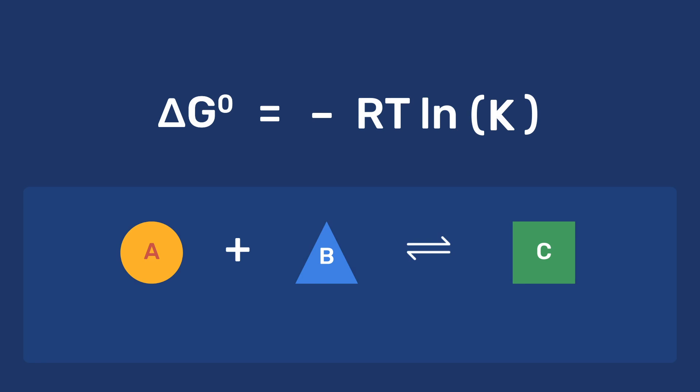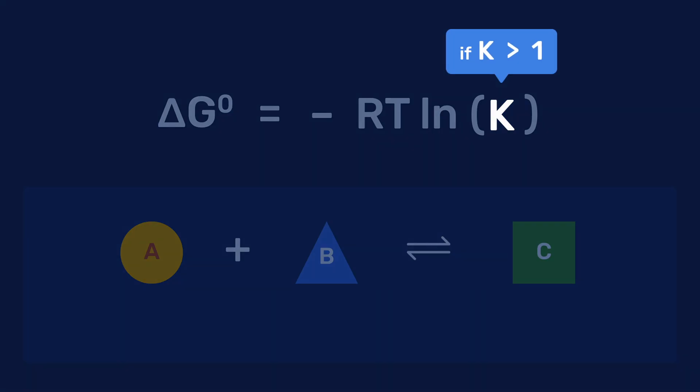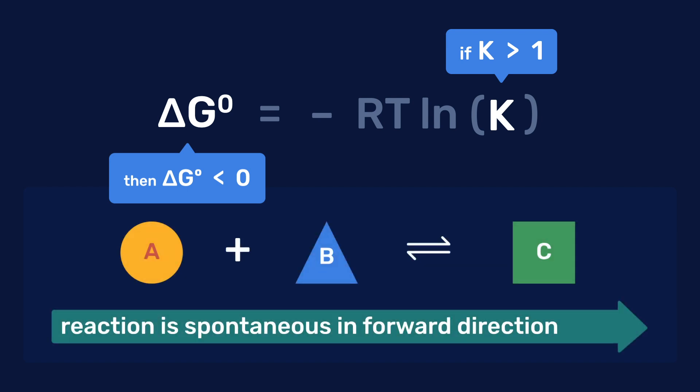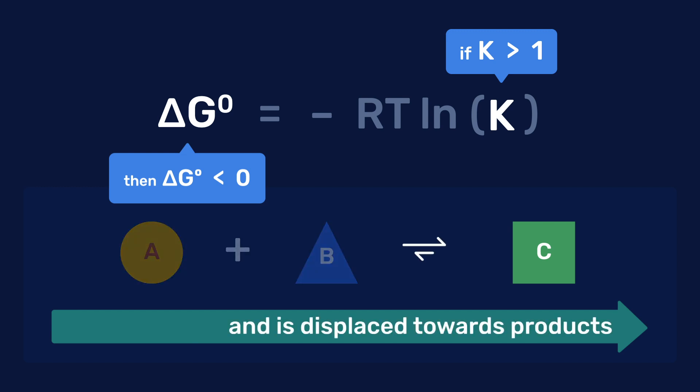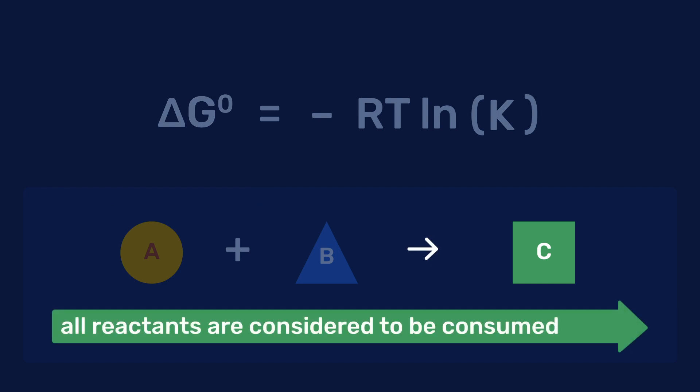Specifically, if K is larger than 1, then ΔG0 is negative, which tells us that the reaction is spontaneous in the forward direction and that it is displaced towards the products. One generally considers that all reactants are consumed if K is larger than 10 to the power 7.